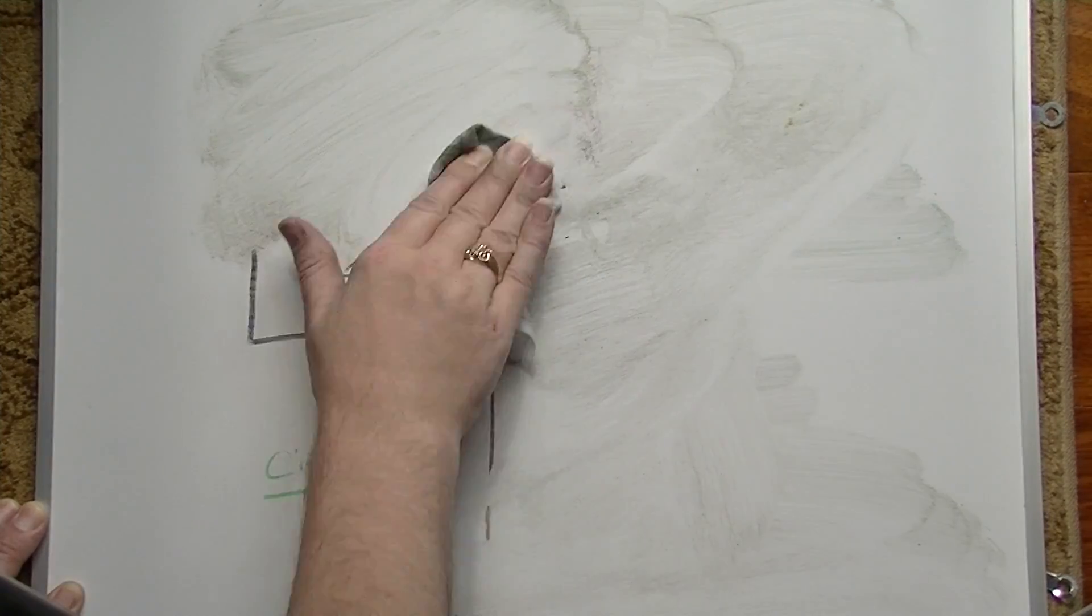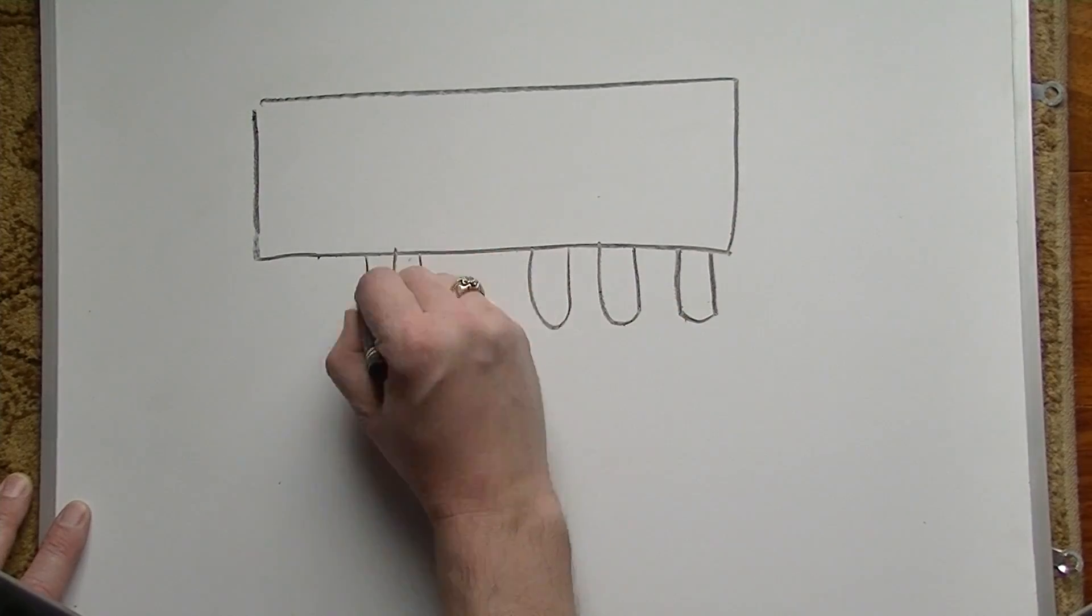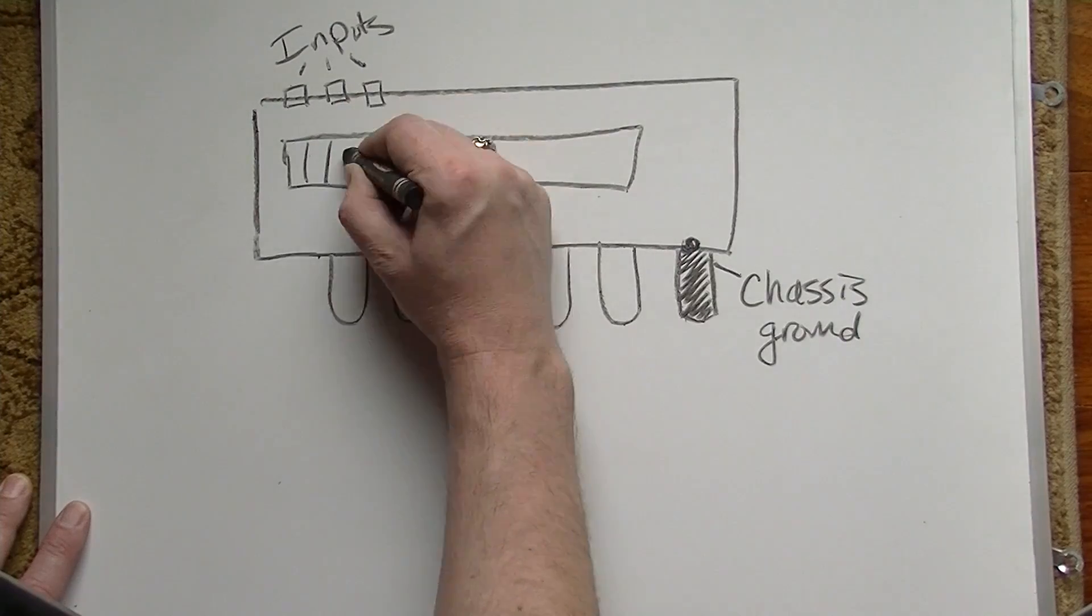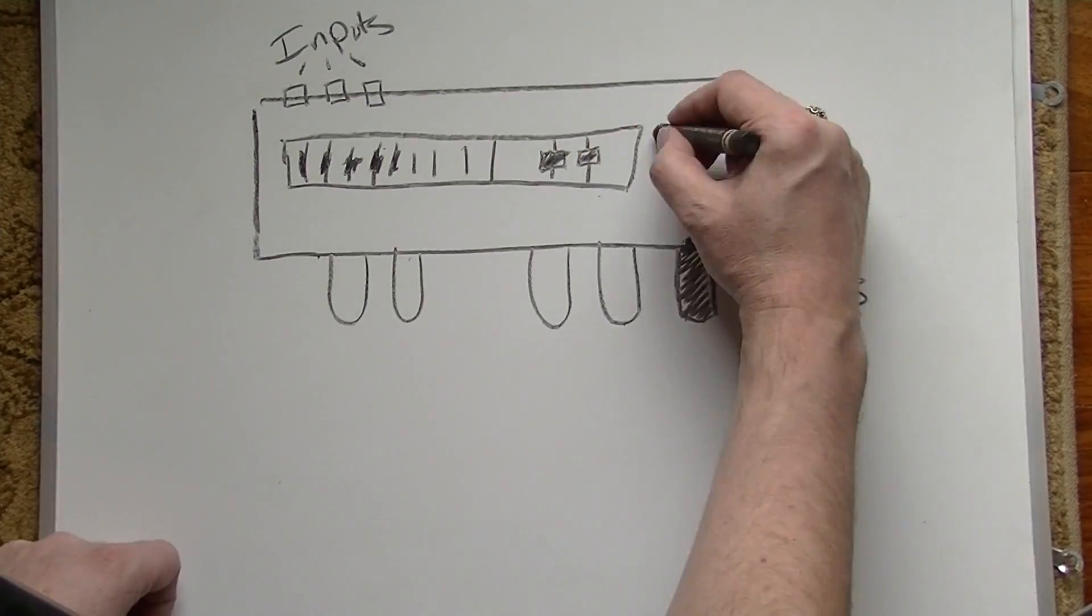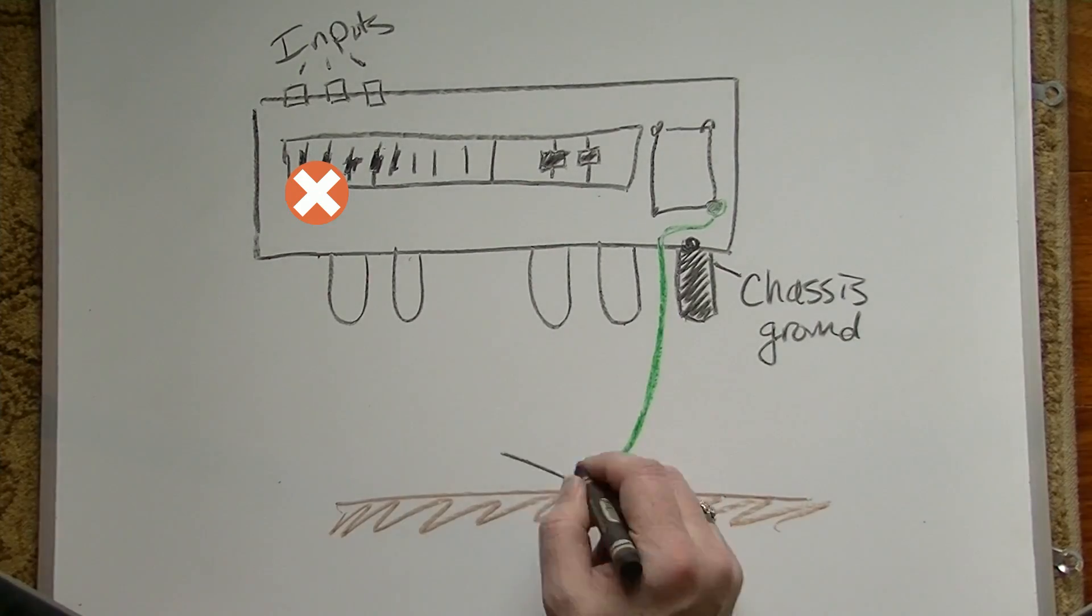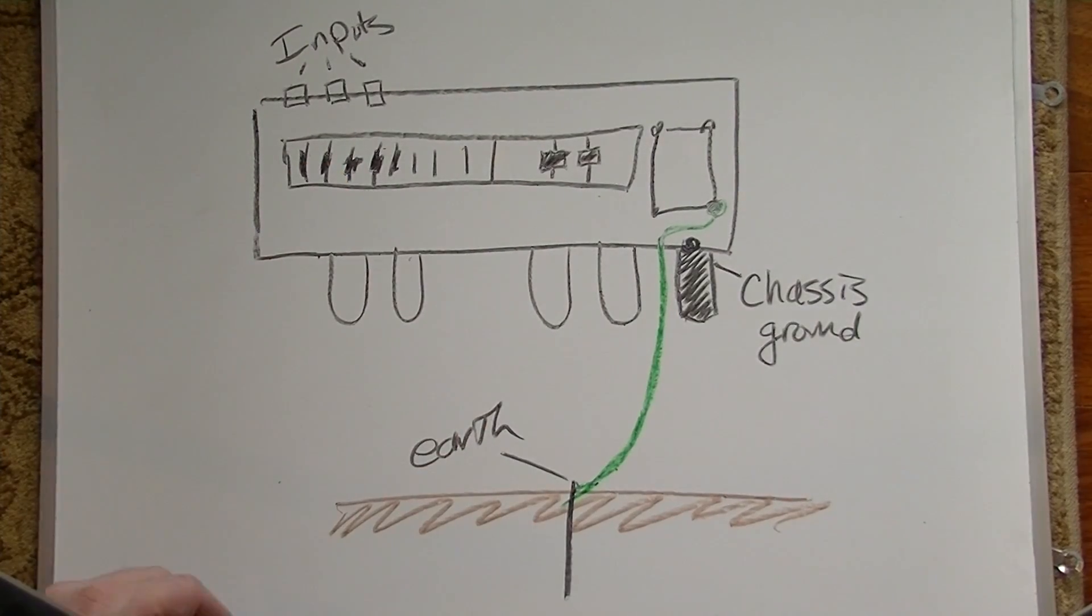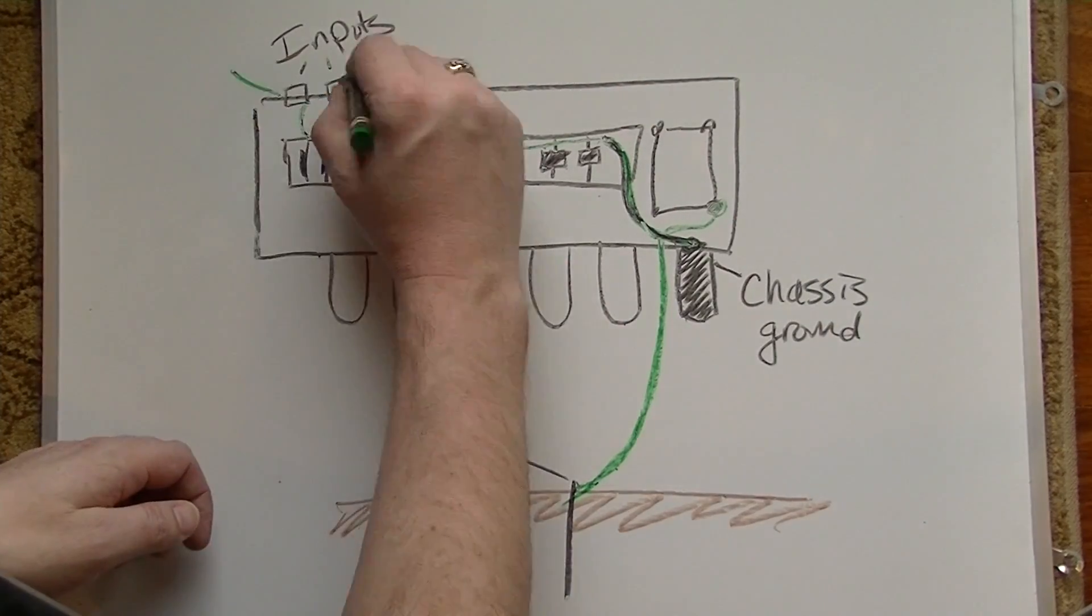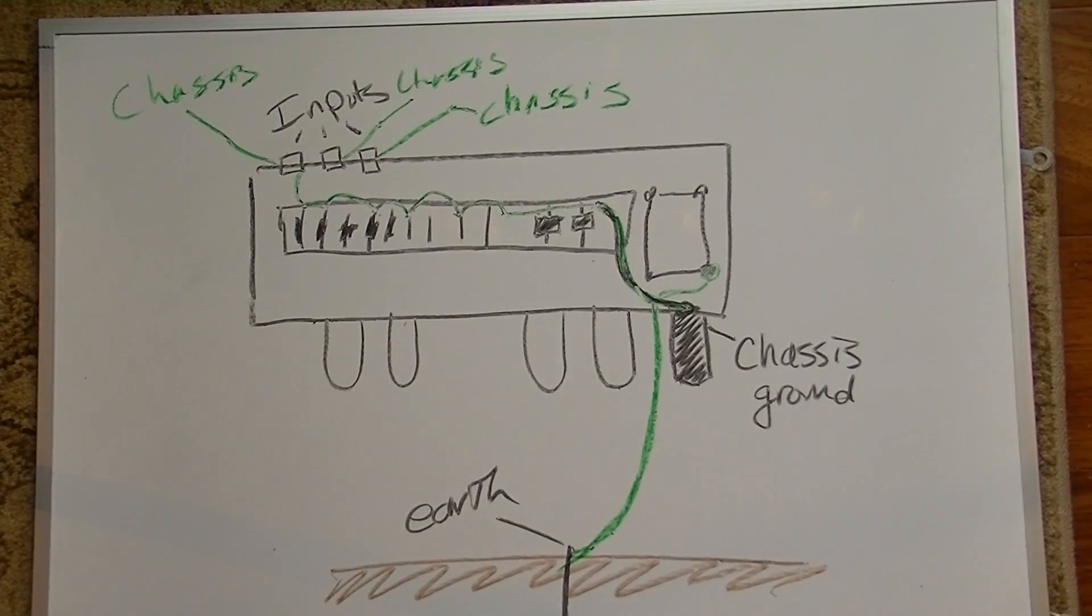In the case of our Ampeg, these connections were made from the factory at the capacitor can, at the input jacks, and also at the output transformer not shown here. There was no direct earth connection. The center taps for both the six volt and B plus windings were connected to the capacitor can.